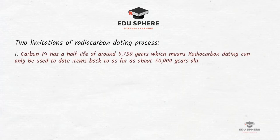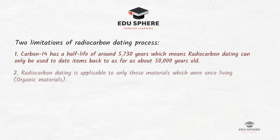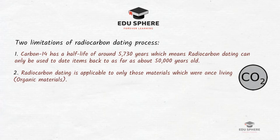First, radiocarbon dating has a half-life of around 5730 years, which means it can only be used to date items back to as far as 50,000 years old. The second shortcoming is that radiocarbon dating is applicable only to materials which were once living and directly or indirectly took in carbon dioxide when alive — simply put, it applies to organic materials only.